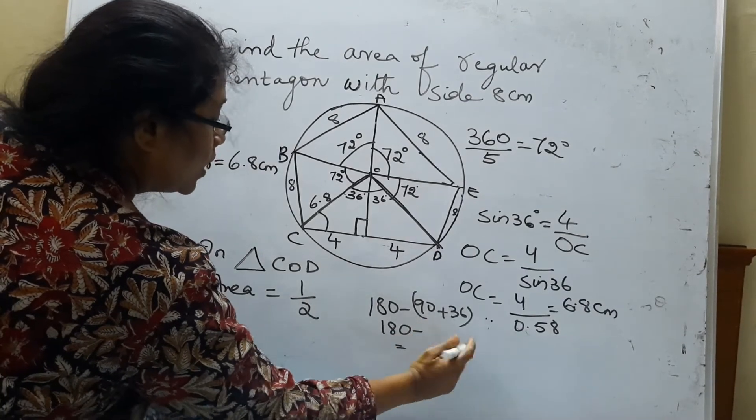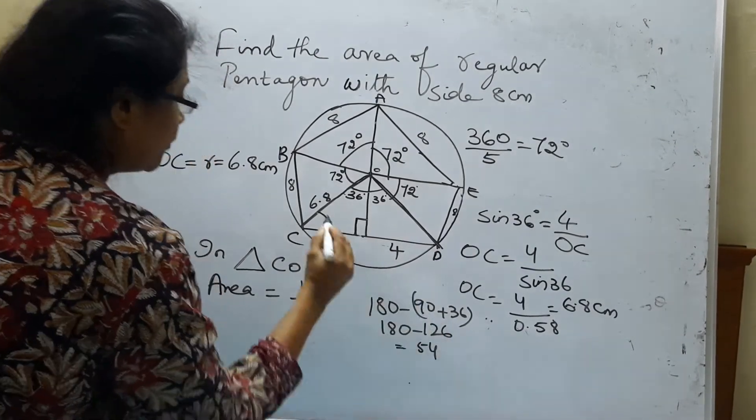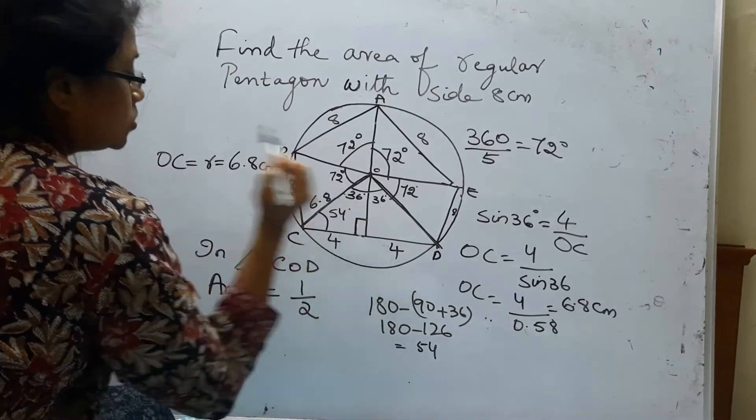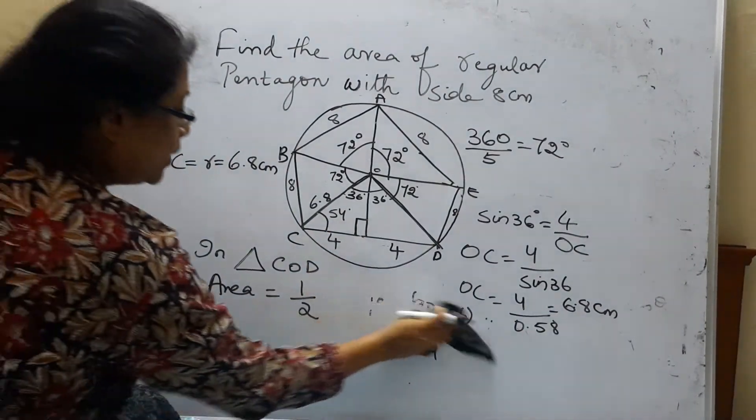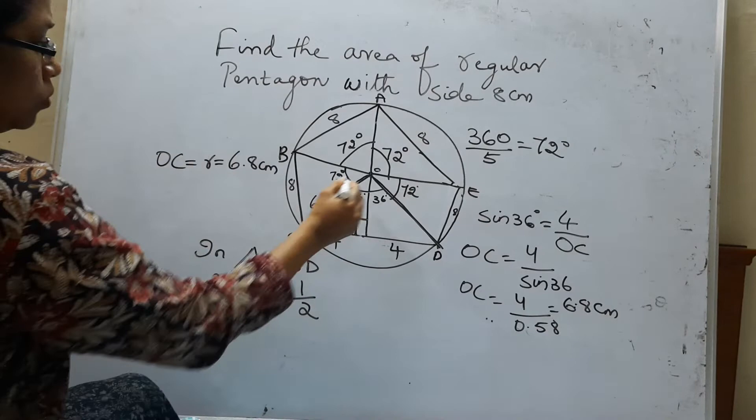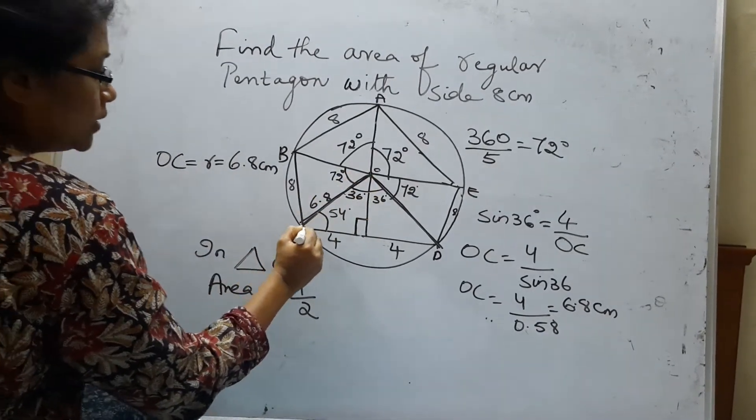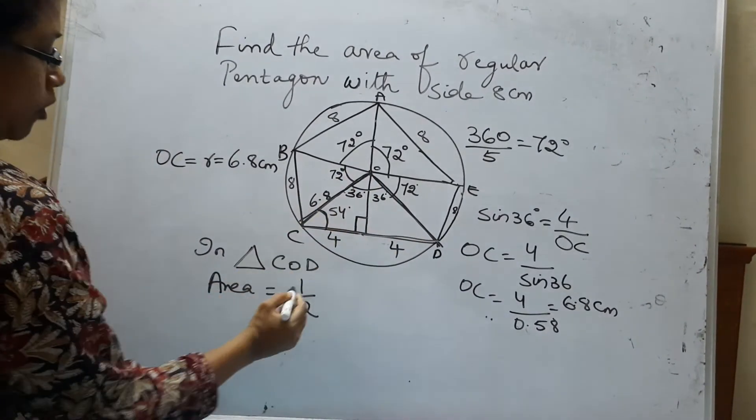Sorry, I made an error. This is 54. So this is 54 degrees. So now this side you know, this side you know, this angle you know. You can apply the formula.